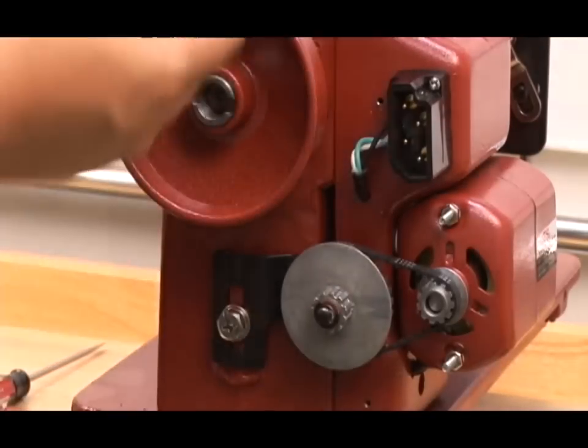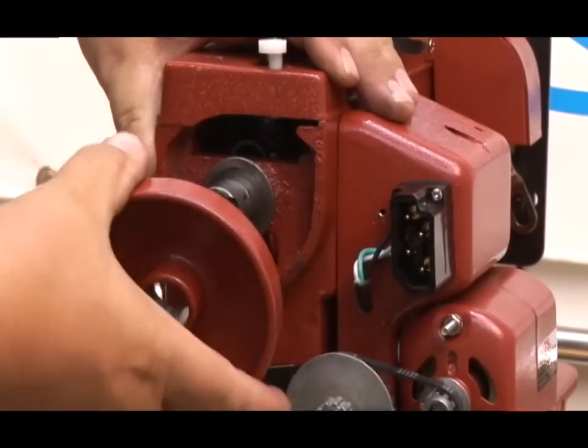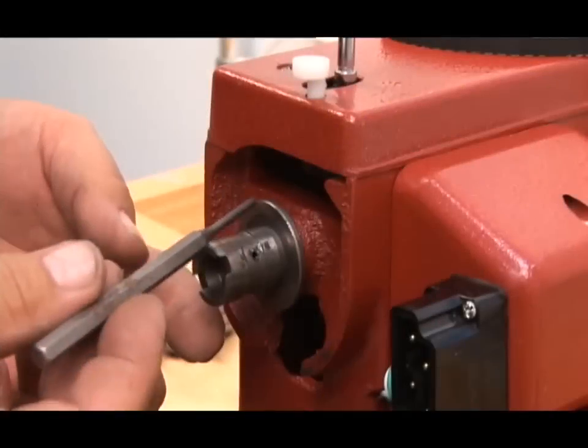Remove the belt, then grasp the balance wheel and pull it directly off. Underneath you'll find a bushing that must be removed.